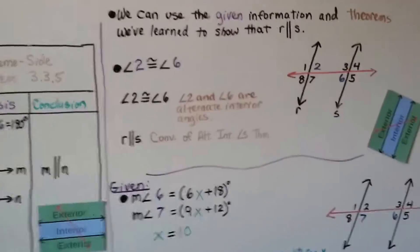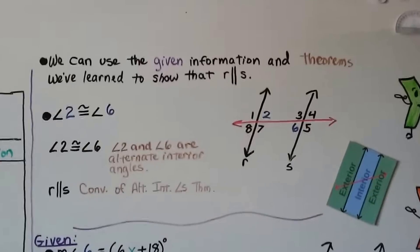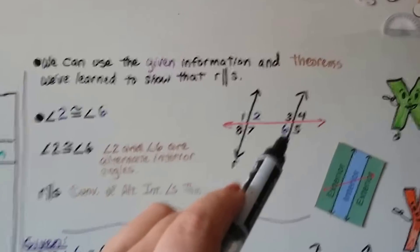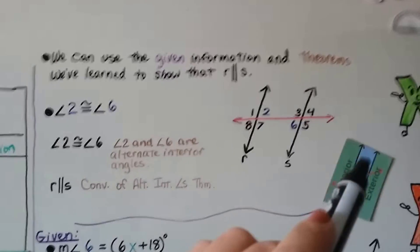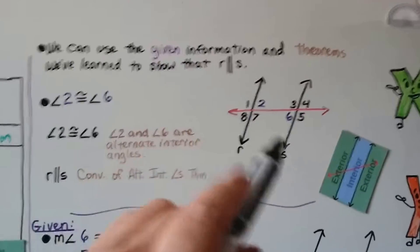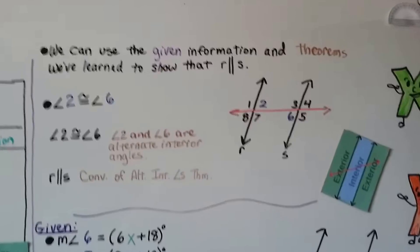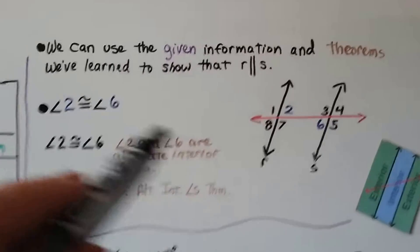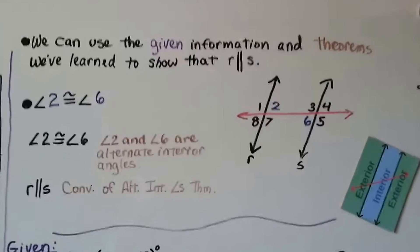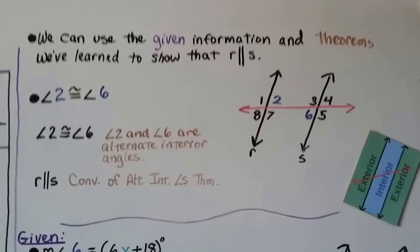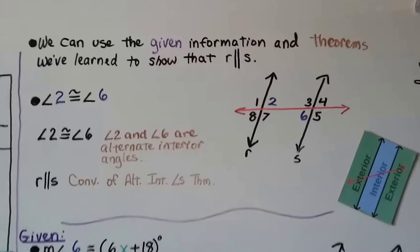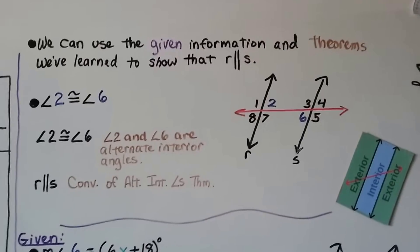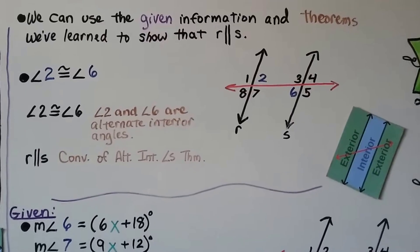We can use the given information and theorems we've learned to show that r is parallel to s. We have angle 2 and angle 6 — they're on the interior and on opposite sides of the transversal, so they're alternate interior angles. Angle 2 is congruent to angle 6, and therefore r is parallel to s by the converse of the alternate interior angles theorem. If they're congruent, then r and s are parallel.